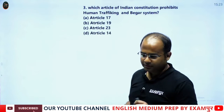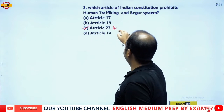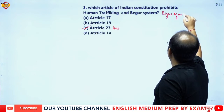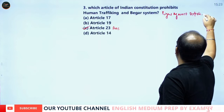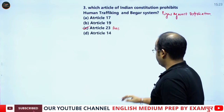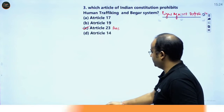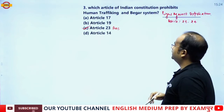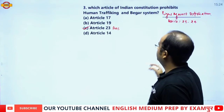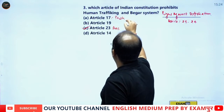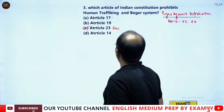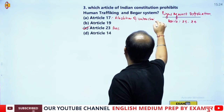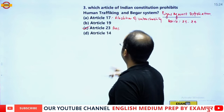The correct answer is Article 23, and it is under the Right Against Exploitation, defined in Articles 23 and 24. Article 17 is the abolition of untouchability, Article 19 covers six democratic freedoms, and Article 14 is equality before law.